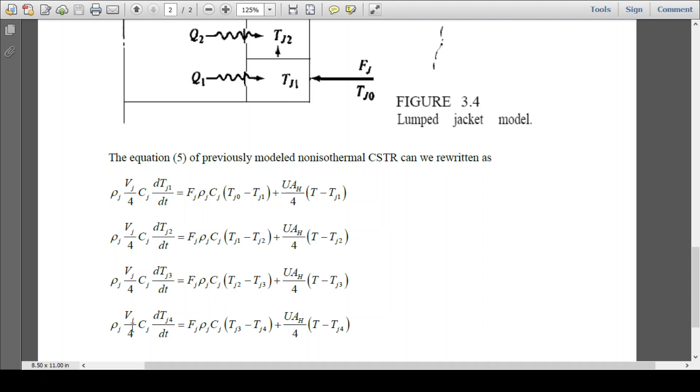Fourth lump is ρj Vj/4 cj dtj4/dt equal to fjρjcj tj3 minus tj4 plus UAh/4 T minus tj4. So similarly we can write n number of equations to achieve the better well mixed conditions.